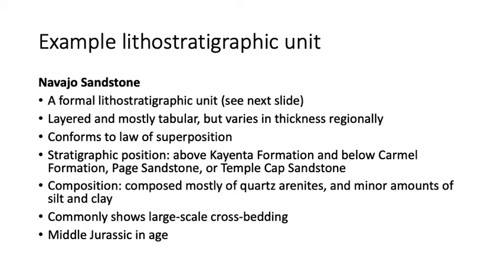The Carmel Formation is actually a marine unit — there was a marine incursion during Jurassic time. The Navajo Sandstone is mostly quartz arenite with small amounts of clay and silt, large-scale crossbedding indicating aeolian processes, and it is Middle Jurassic in age. Some people use the archaic term 'medial Jurassic,' but 'middle' is the preferred designation today.